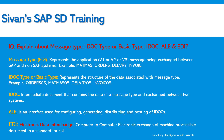What is ALE? This is the most important interview question. ALE — Application Link Enabling — is an interface used for configuring, generating, distributing, and posting of IDocs. It is SAP's own interface used within SAP-to-SAP systems. EDI stands for Electronic Data Interchange — computer-to-computer electronic exchange of machine-processable documents in a standard format.